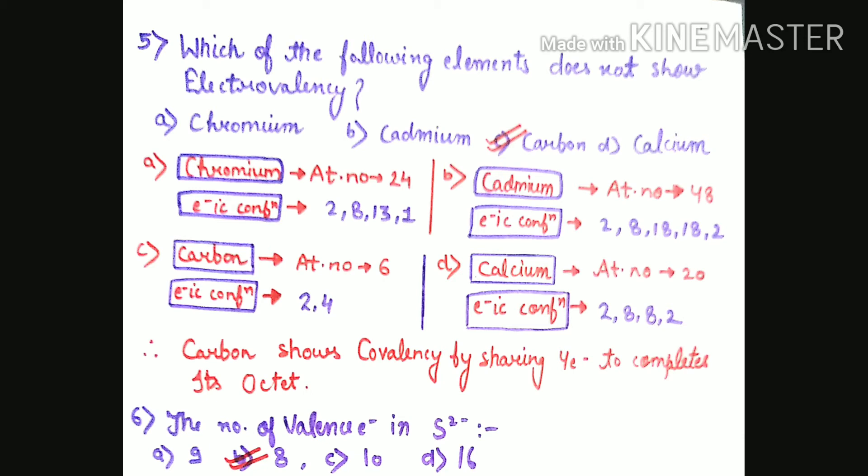Question number 6: The number of valence electrons in S2-. Sulfur's atomic number is 16. S2- is its anion, so atomic number becomes 18. Electronic configuration will be 2,8,8. The number of valence electrons in the outermost shell will be 8. Second option is the right answer.